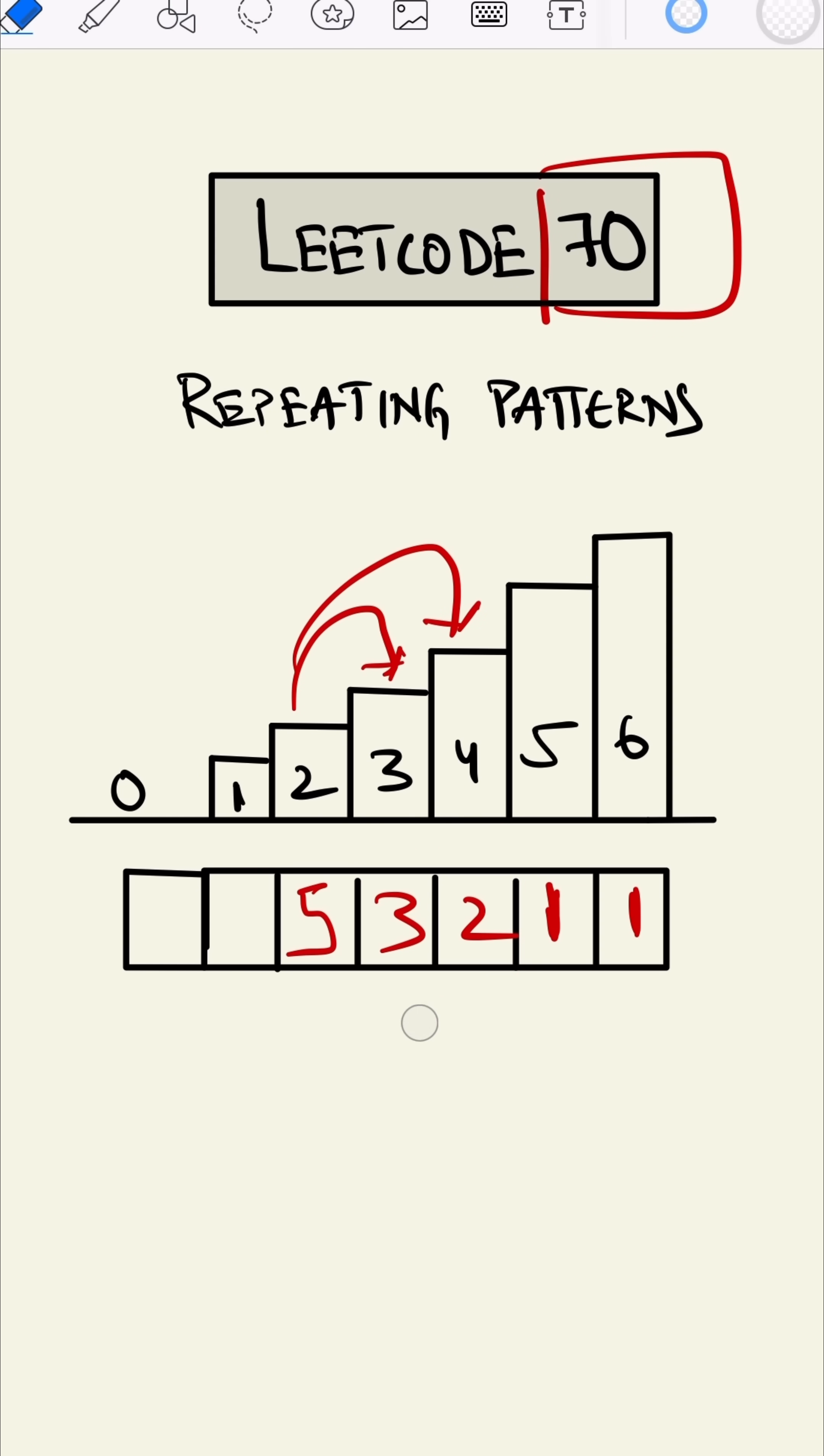For one, we can do addition of these two, which is eight. And for the zeroth step, we can do addition of these two, which is 13. So 13 will be our answer.